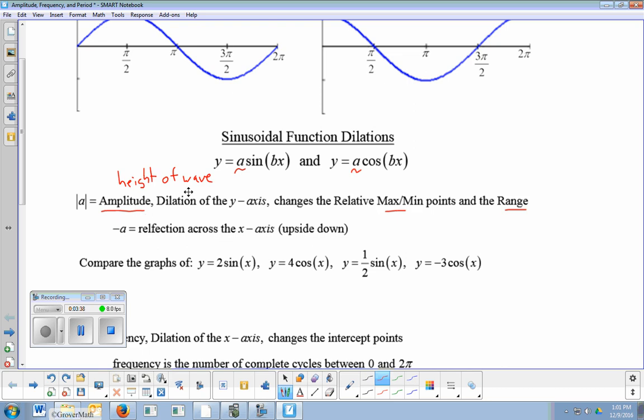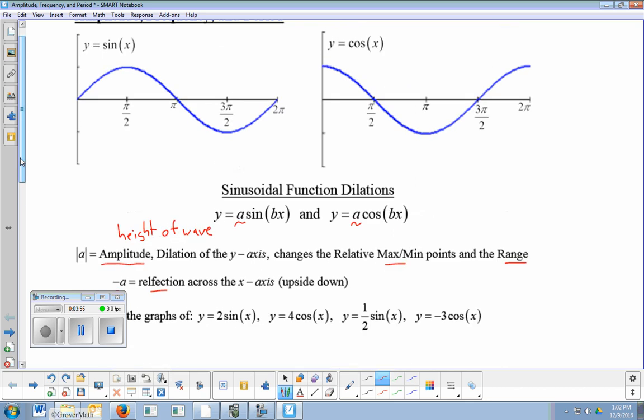Now, if a happens to be negative, like if you have y equals negative 2 sine x, what does that do? Well, it's still a dilation. But what happens is when you negate the front of a function like this, it is a reflection across the x-axis. So that's when the graph is upside down. So negative sine x will look like that. Negative cosine will look like that. It's a reflection over the x-axis. So if you see a negative in there.